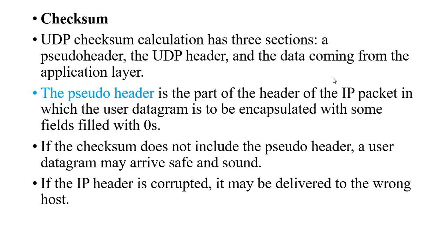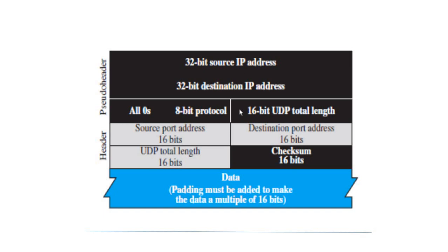The UDP checksum plays a major role. The checksum calculation has three sections: the pseudo header, the UDP header, and data coming from the application layer. The pseudo header is the part of the IP packet header in which the user data is to be encapsulated, with some fields filled with zeros. The pseudo header takes on values so that we can form the datagram frame and deliver data without errors. You can view the overall structure of the UDP header including the pseudo header — one part is the pseudo header and the other part is the UDP header as learned previously.